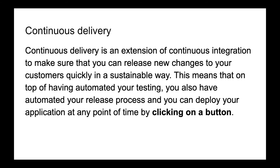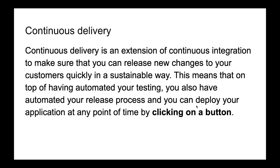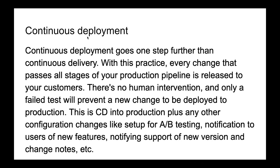Continuous delivery is an extension of continuous integration — it's the next step. When you make changes, you can release these new changes to your customers quickly in a sustainable way. That means that on top of having automated your testing, you also have automated your release process and you can deploy your application at any point in time by clicking a button. What is important is that it's a manual action — somebody should make that decision and publish it to production. Continuous deployment is almost the same but it's automatic, so there is no human intervention and everything will be published if all tests pass.